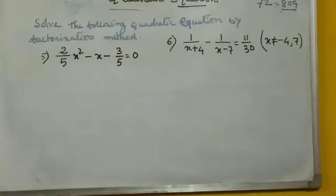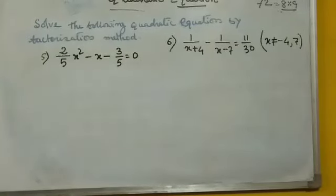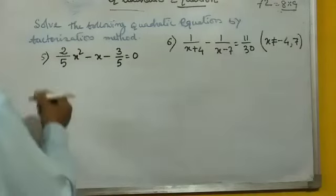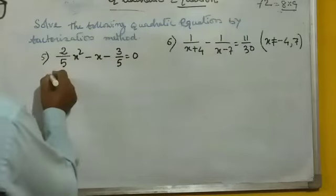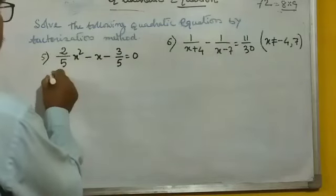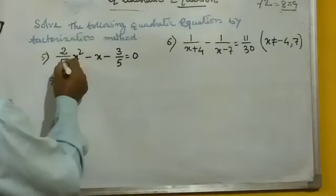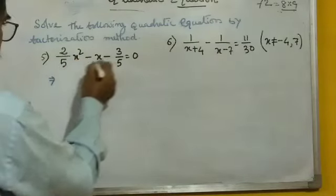Now we solve the following equation by factorization method. This is a fraction, so first of all we cancel the fraction. The LCM here is 5, so multiply all the terms by 5.